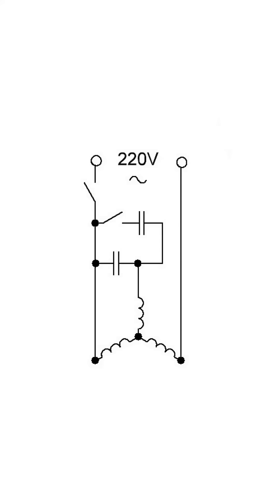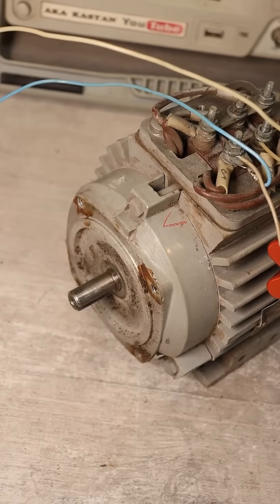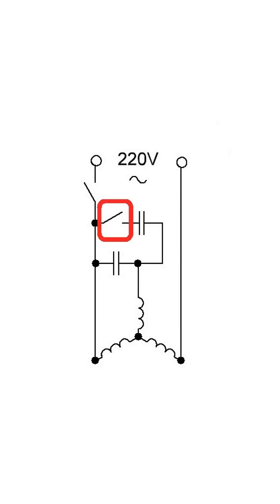The starting capacity is additional and is only connected to the circuit when starting the motor. First, the starting capacitor is connected with a powerful switch, then the network switch.